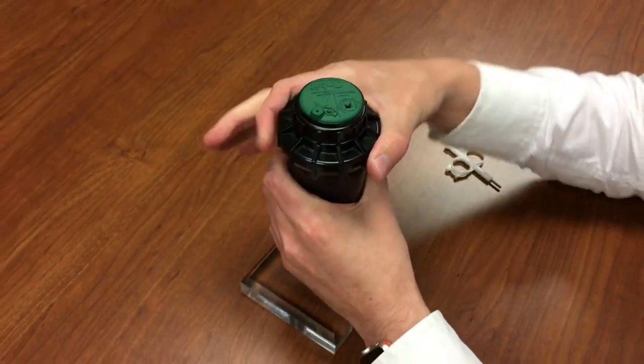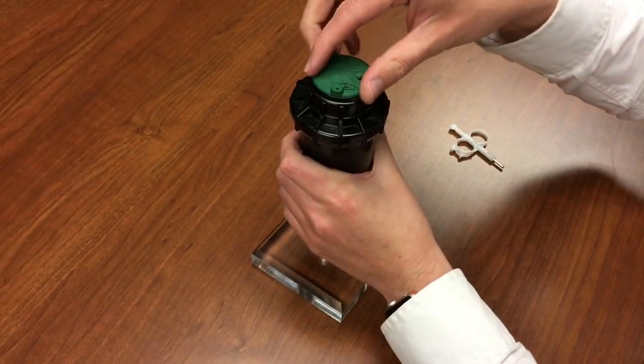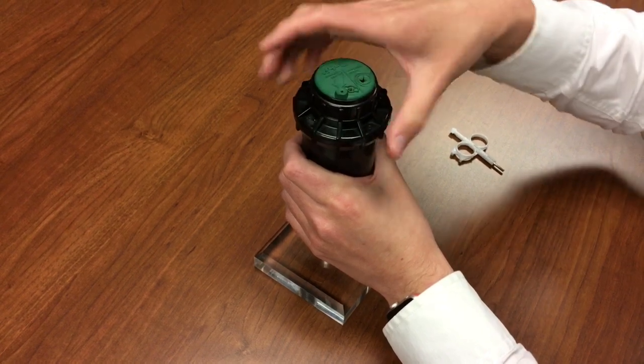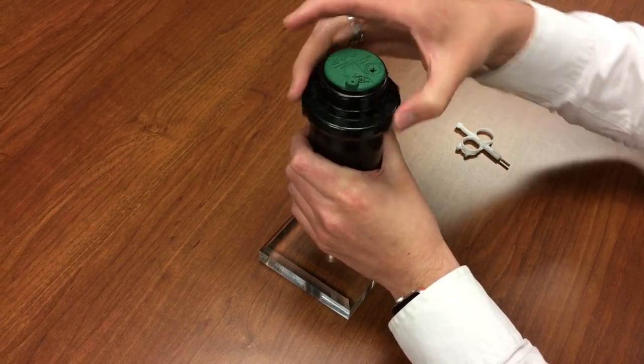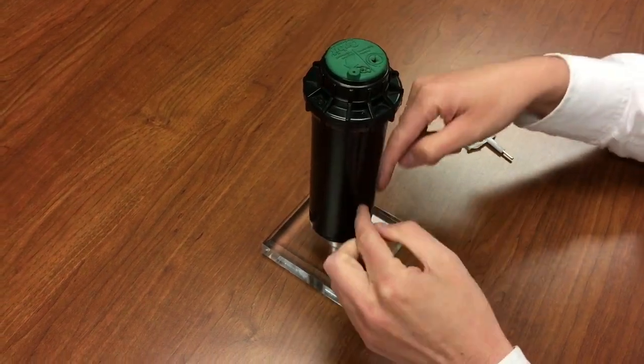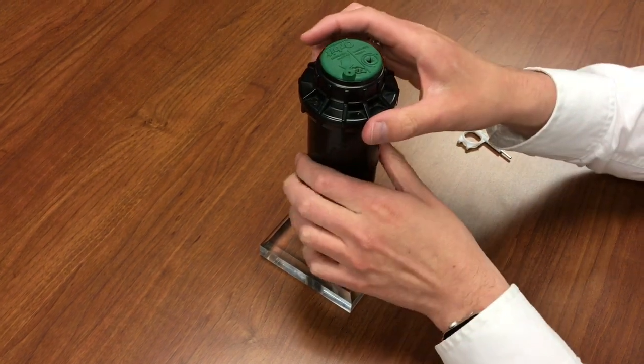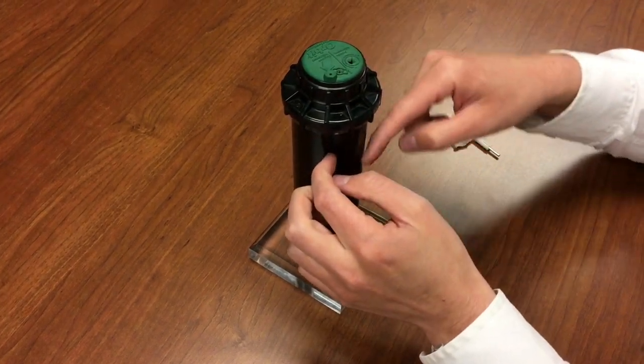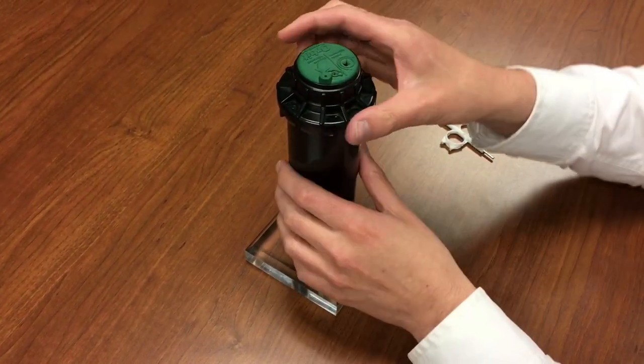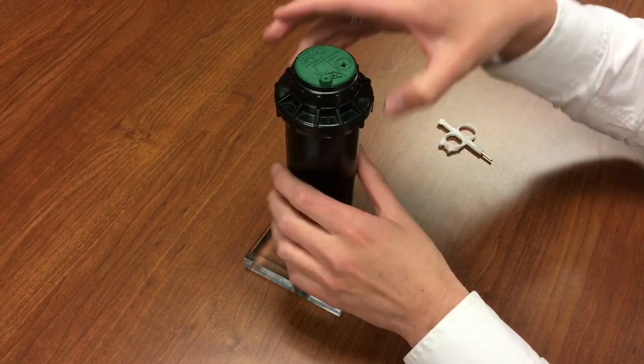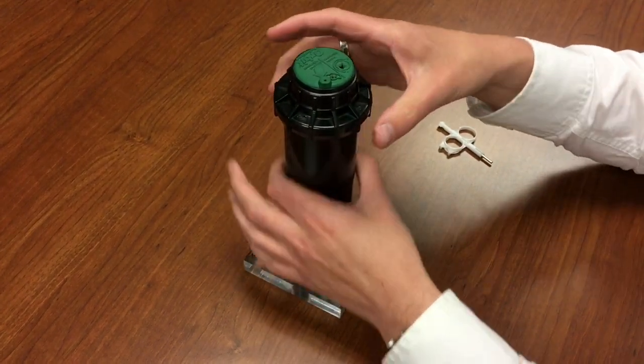So as I unscrew the cap here, you'll notice that the actual sprinkler body stays stationary. It doesn't spin with the cap, and that's because there are teeth inside one of the outside gears that lock into a geared inner diameter of the actual base and cap.